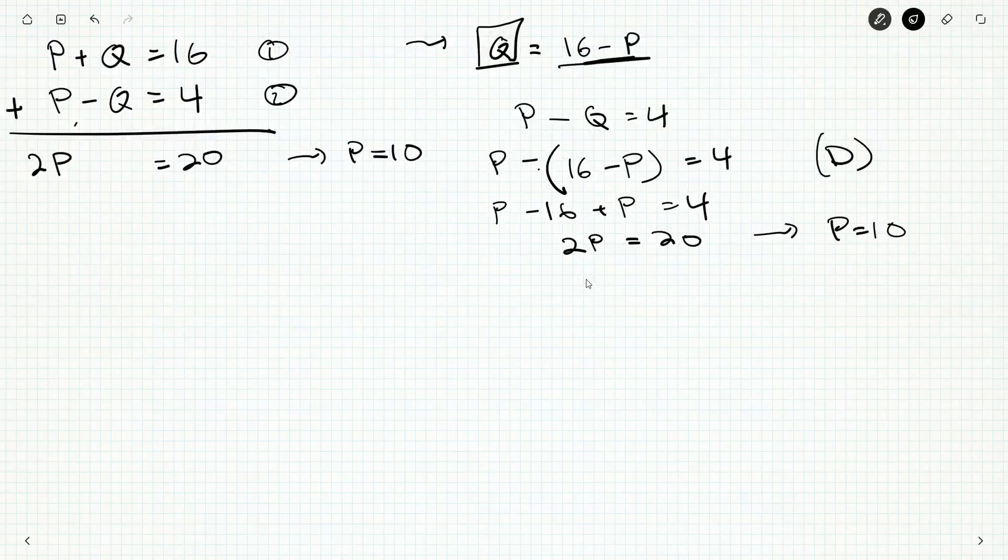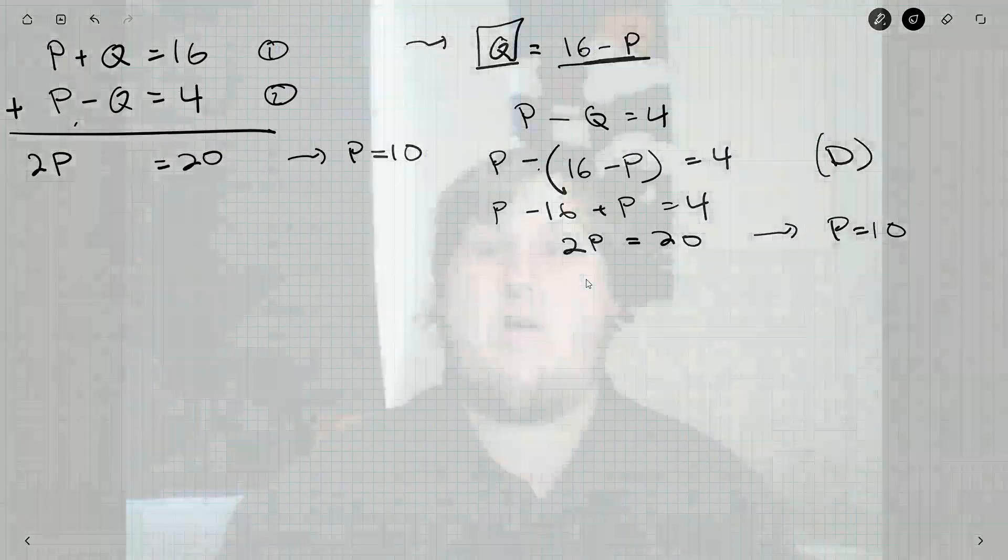So you can tackle it either way, rearrange and solve for one of the variables, or you can be fancy and add both equations. And either way we get our answer of D, P is equal to 10.